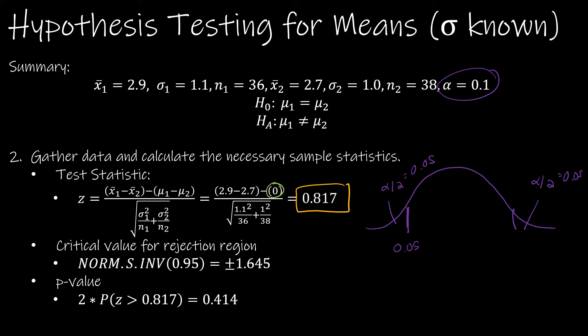So I can either take norm s inverse of 0.05, but that's going to give me a negative value, or norm s inverse of 0.95, either one, because there's 0.95 to the left of the value.